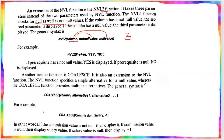For example, using NVL2 with the prerequisite column: if the prerequisite does not have a null value, then a specific value is shown. If the prerequisite column is null, the null-case value is displayed. So both null and not-null outcomes are handled.